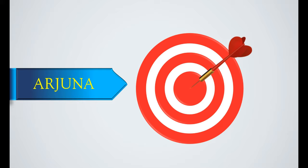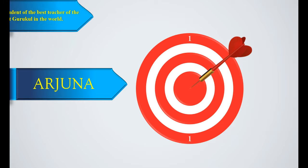in that battlefield, Arjuna became bewildered. He was the best student of the best teacher of the greatest Gurukula in the world. In Hastinapur, he was the student of Dronacharya.